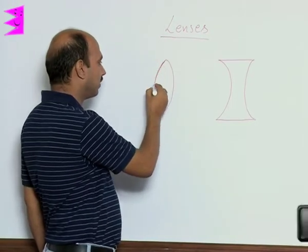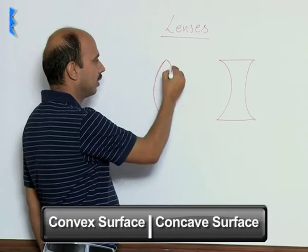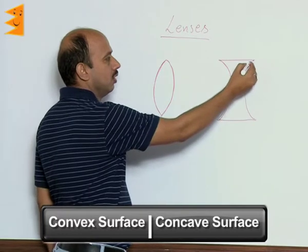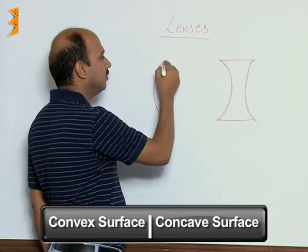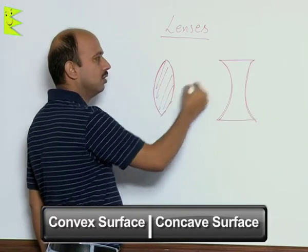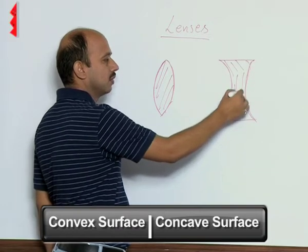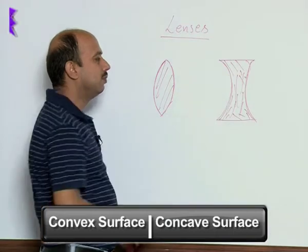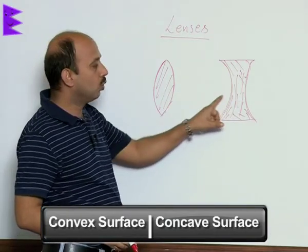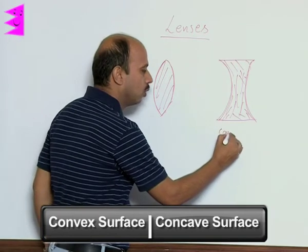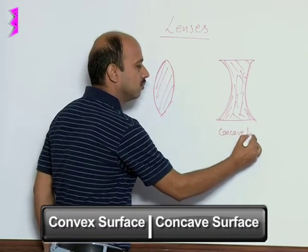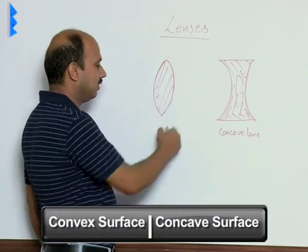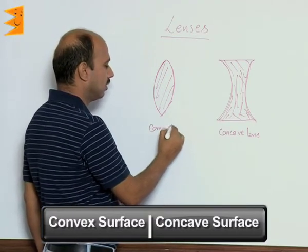These are two convex surfaces here and these are two concave surfaces. Inside is completely glass here, similarly here the glass is here. This transparent material is bound by two concave surfaces, so this is known as concave lens. Here two convex surfaces are here, so this is known as convex lens.